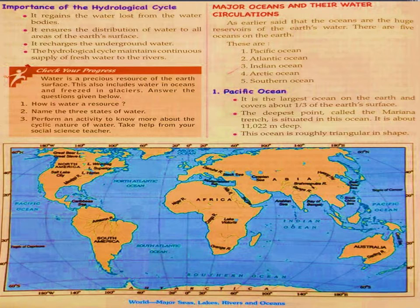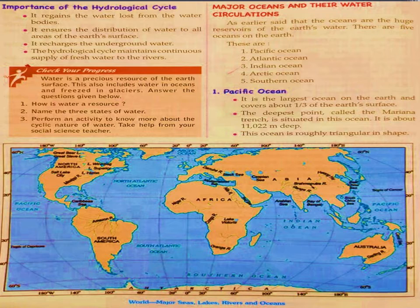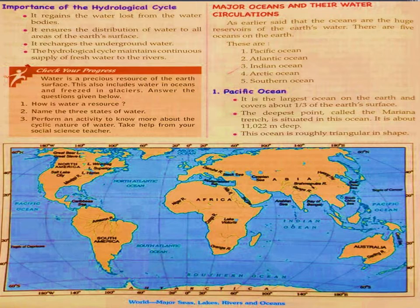Now we have some questions to check your progress. Water is a precious resource of the earth's surface, including water in oceans and frozen water in glaciers. Answer the questions: How is water a resource? Name the three states of water. Perform an activity to know more about the cyclic nature of water.